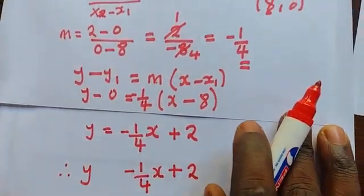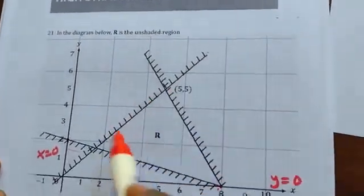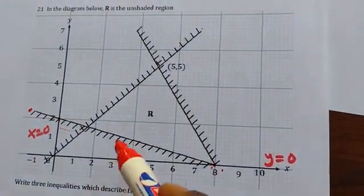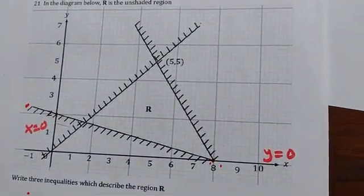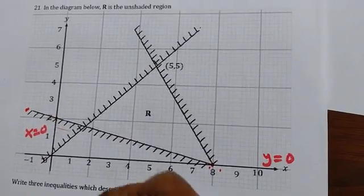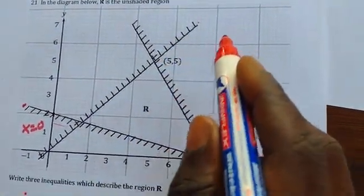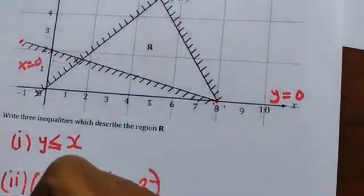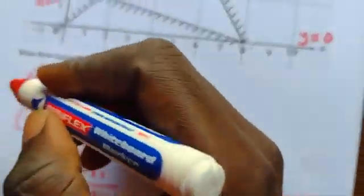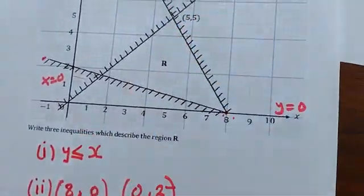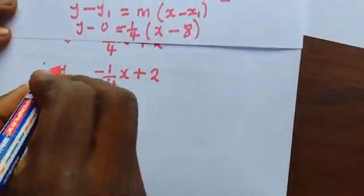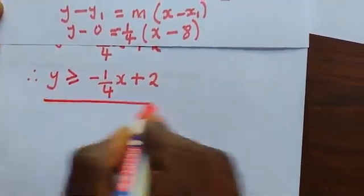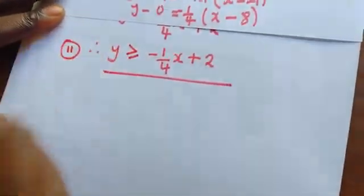Now remember, we are talking about inequalities, where we are supposed to use an inequality symbol. So here we write y, leave space, then write negative 1 over 4x plus 2. Getting back to our diagram — this is the line I'm talking about. The shaded part is coming down. They want us to describe the unshaded part. The unshaded part is the upper region, which is greater. The shaded is less, the unshaded is greater. So we write: y is greater or equal to negative 1 over 4x plus 2. This is our second inequality.